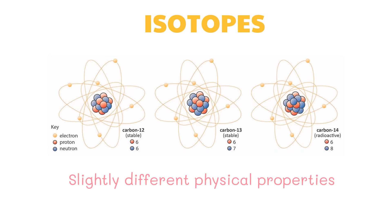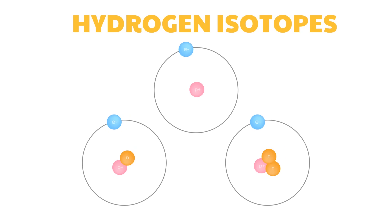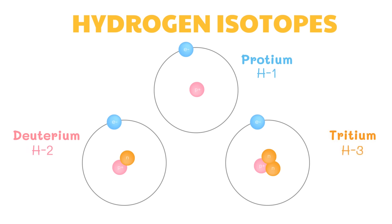The slight variation in physical properties among isotopes is due to small differences in their relative masses. Most elements have at least two or three isotopes. For example, hydrogen has three known isotopes: protium, deuterium, and tritium, symbolized as hydrogen-1, hydrogen-2, and hydrogen-3, with atomic masses of 1, 2, and 3 atomic mass units respectively. Protium has one proton and no neutron; deuterium has one proton and one neutron; tritium has one proton and two neutrons. All three isotopes have one proton, which is the atomic number for hydrogen.